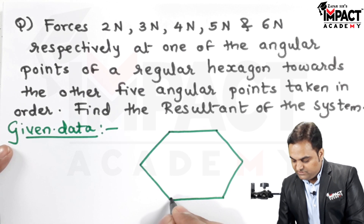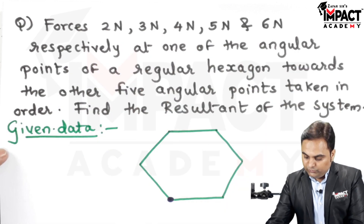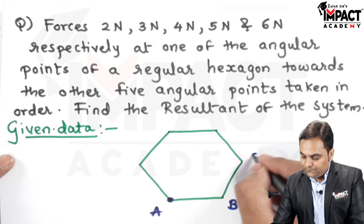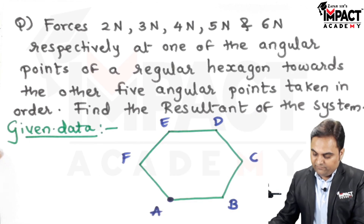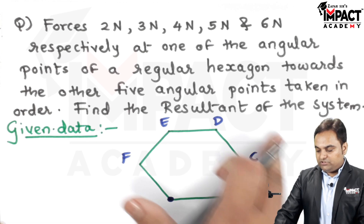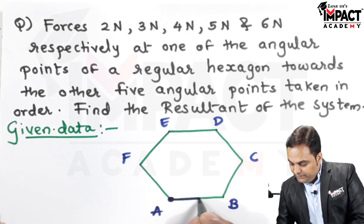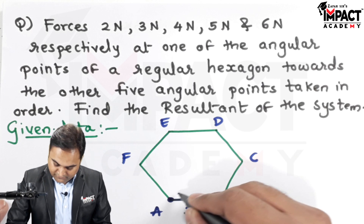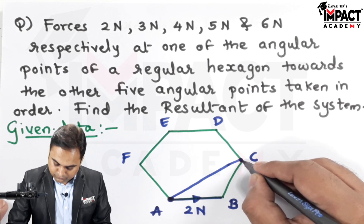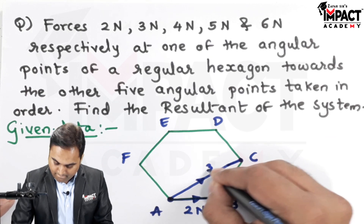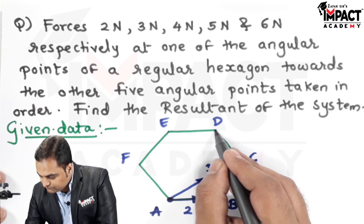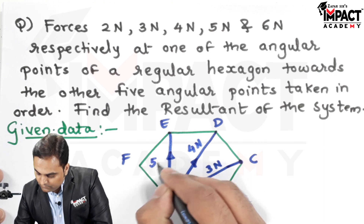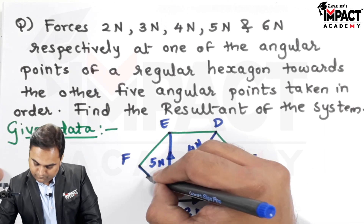I am assuming this is the angular point from which the forces are generating. Forces are acting towards the other angular points, so I'll name them — this is A, and we have B, C, D, E, and F. Starting from point A going towards the remaining angular points: A to B is the 2 newton force, A to C is 3 newton, A to D is 4 newton, A to E is 5 newton, and A to F is 6 newton.